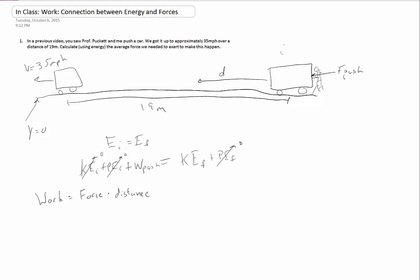So, in this case, the push, the work push, is just equal to force push times the distance over which we're pushing it. And that's equal to the final kinetic energy that we have in the end, which is just one-half mv squared. Okay.